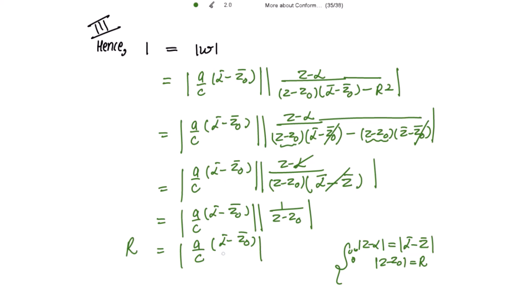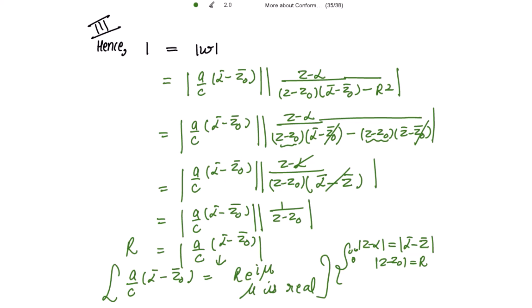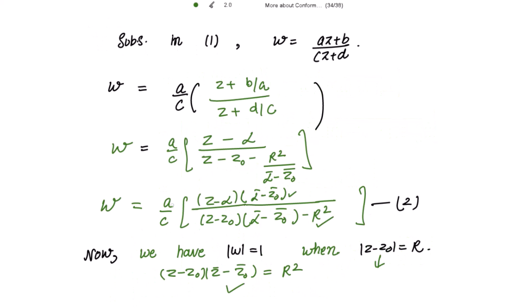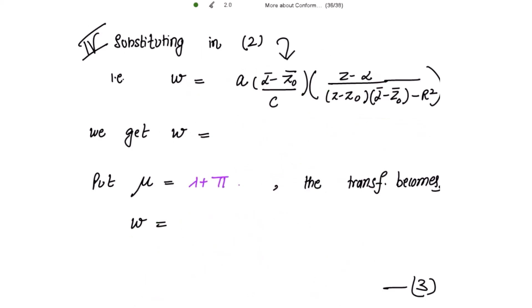This can be written as (a/c)(ᾱ - z̄₀) = r · e^(iμ), where μ is real. Substituting this value back into the transformation, we get w = r · e^(iμ) · (z - α) / ((z - z₀)(ᾱ - z̄₀) - r²).